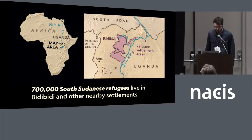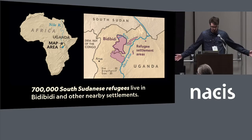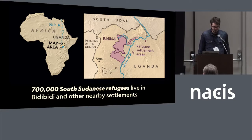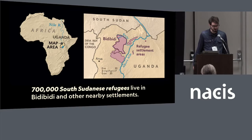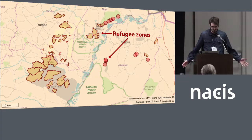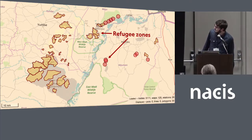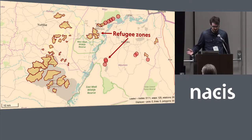Let's zoom in on the specific place we covered. This is northwest Uganda, home to a number of refugee settlement areas. The largest is called Bidi Bidi, home to more than 700,000 South Sudanese refugees. For a while it was considered the most populous refugee camp in the world, until it was overtaken by the Rohingya camp in Bangladesh. These people are fleeing a civil war that broke out in South Sudan in 2016. Though it doesn't really make sense to call this area a single refugee camp — the refugees live in a number of dispersed zones, as shown on OpenStreetMap.